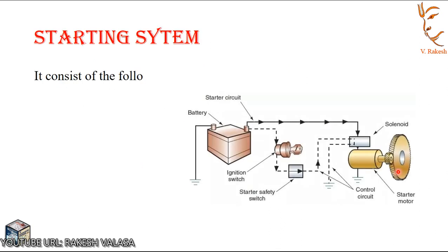The starting system consists of the following parts: Battery, Ignition switch, Magnetic switch. This switch is available in either an electrical relay or a solenoid.